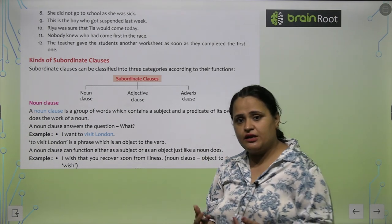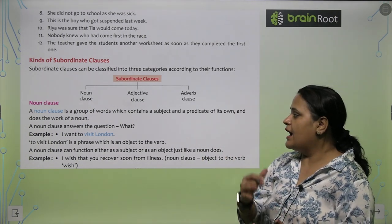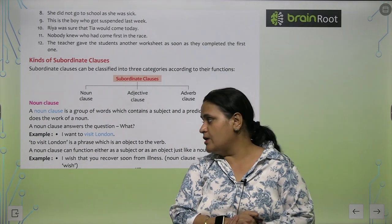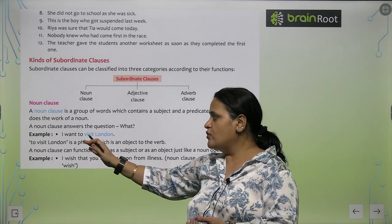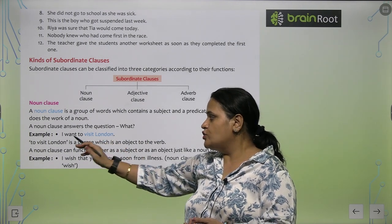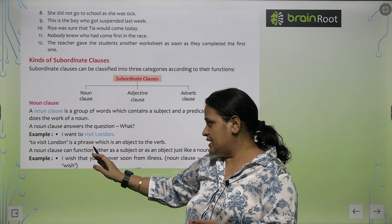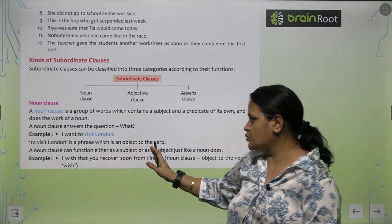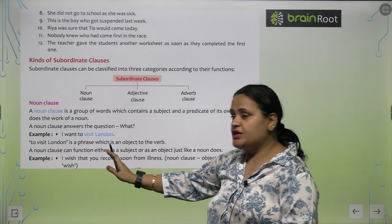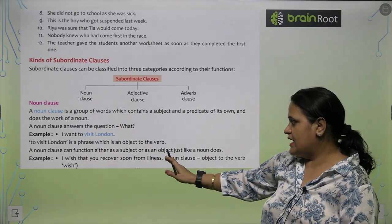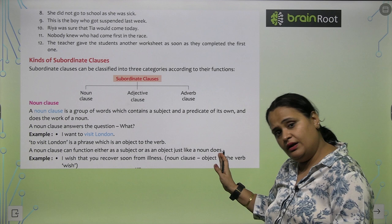Jis mein ek subject aur ek predicate ho and does the verb of a noun. Chaise ke noun clause answer the question what? I want to visit London. To visit London is a phrase which is an object to the verb. A noun clause can function either as a subject or as an object just like a noun does.